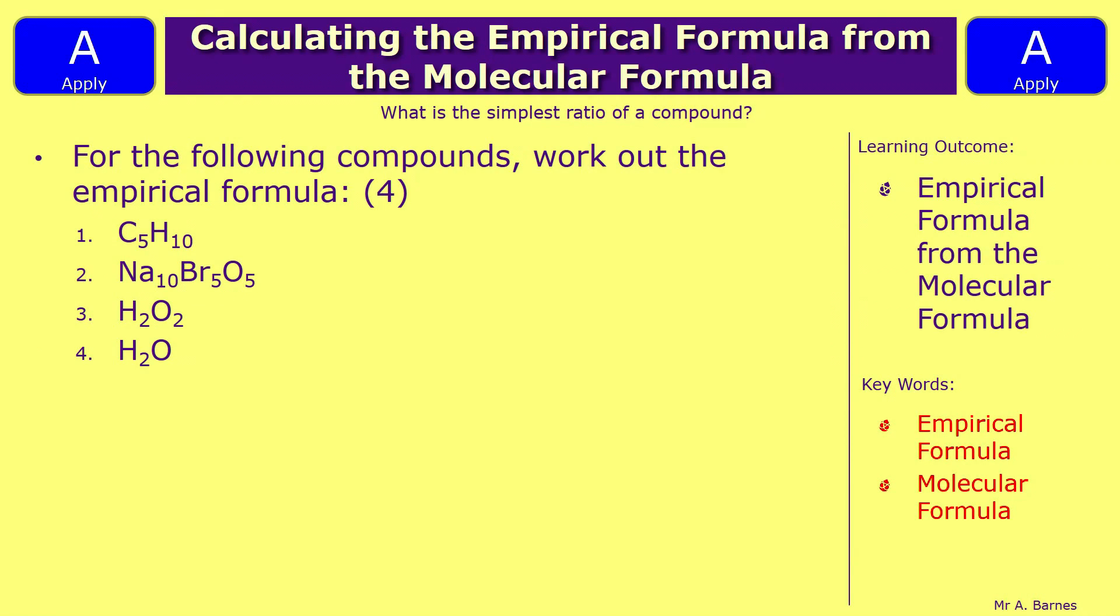Four quick questions on this then. So question one, for the following compounds work out the empirical formula. So you've got C5H10, Na10Br5O5, H2O2 and H2O. Have a go. Pause the video and we'll see how you've done in a second.